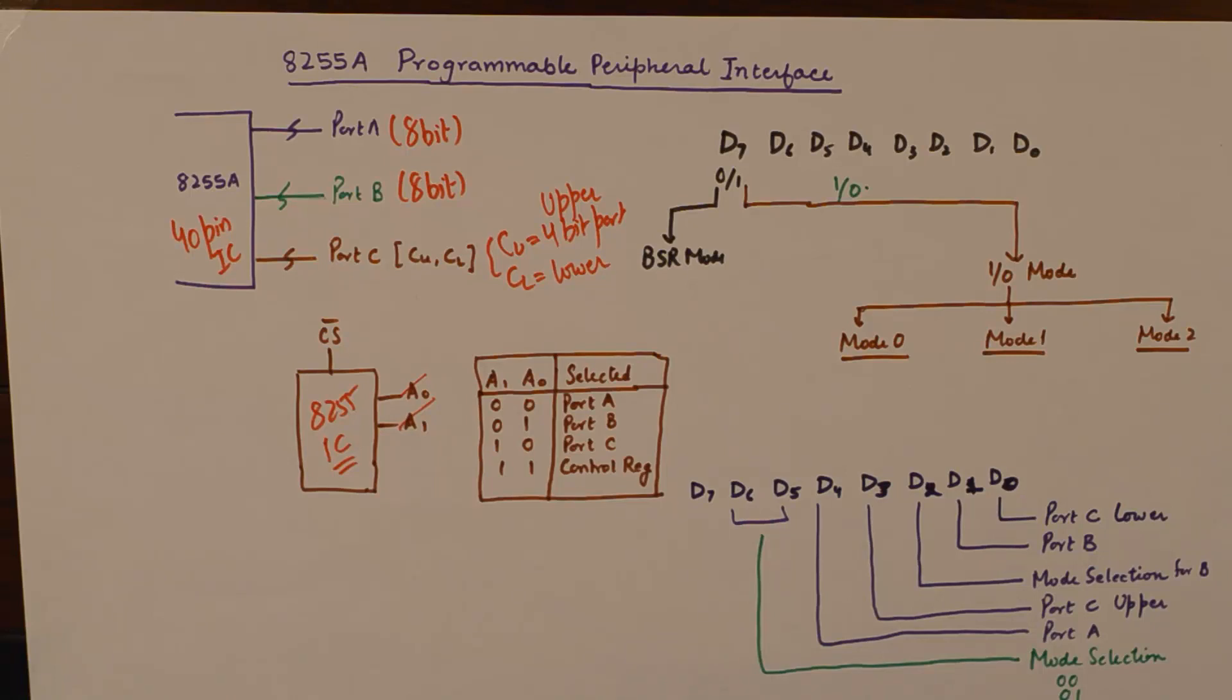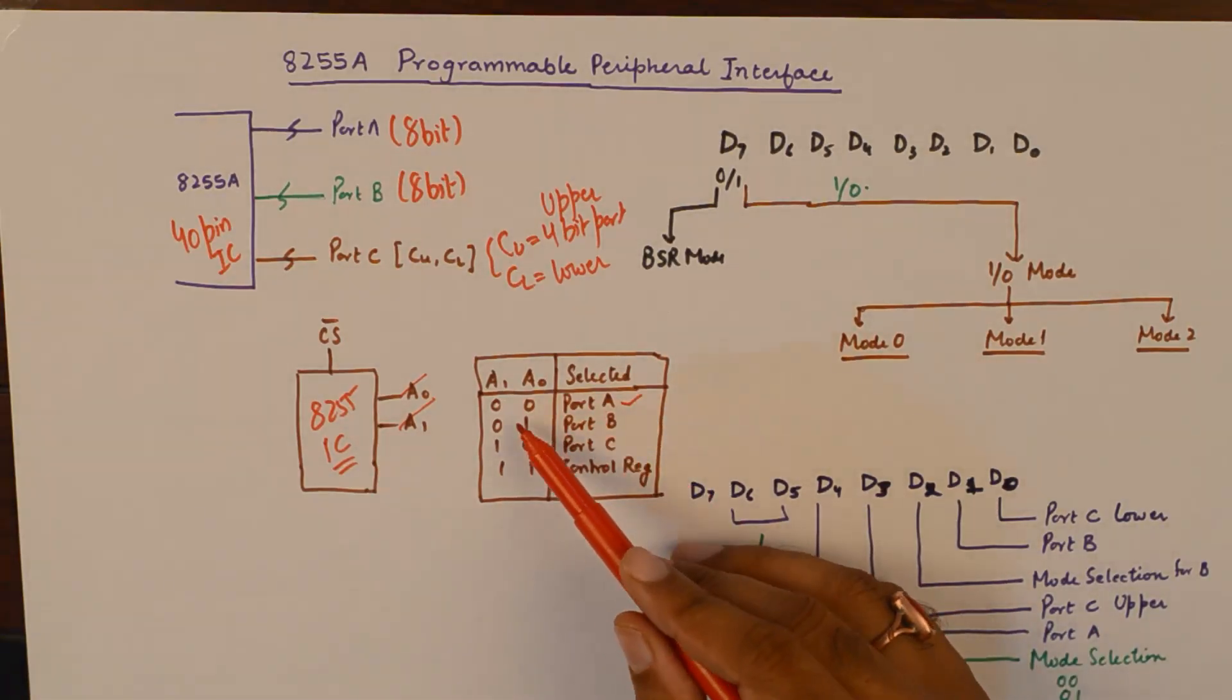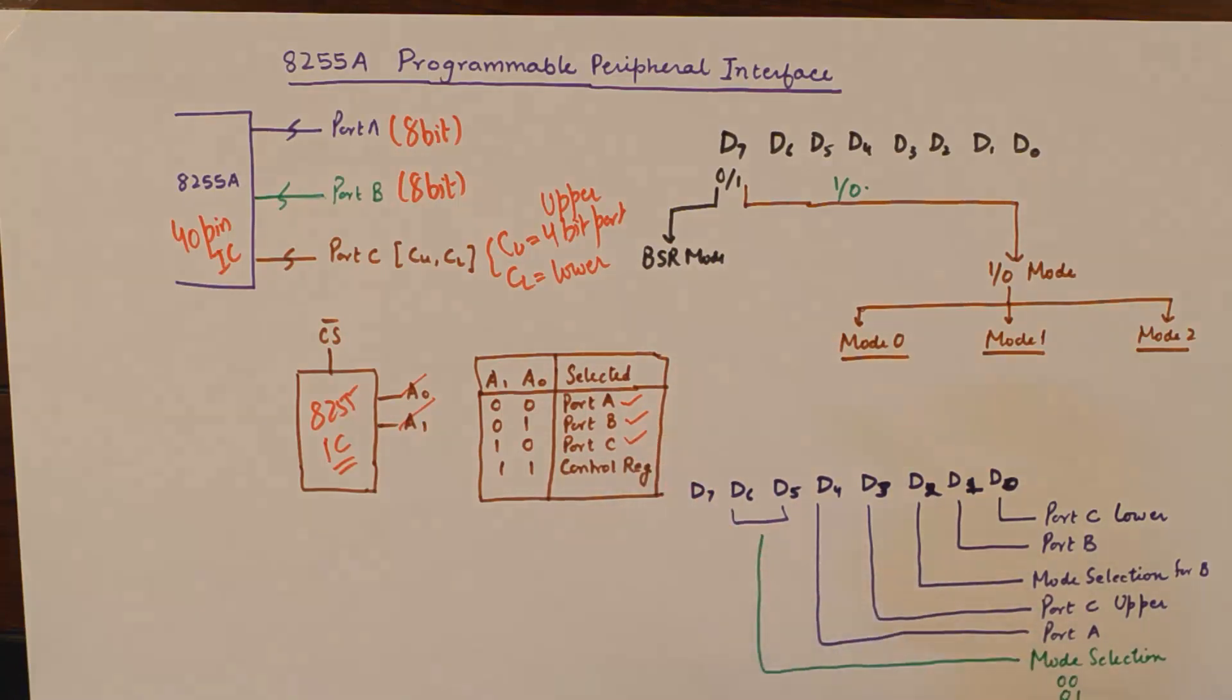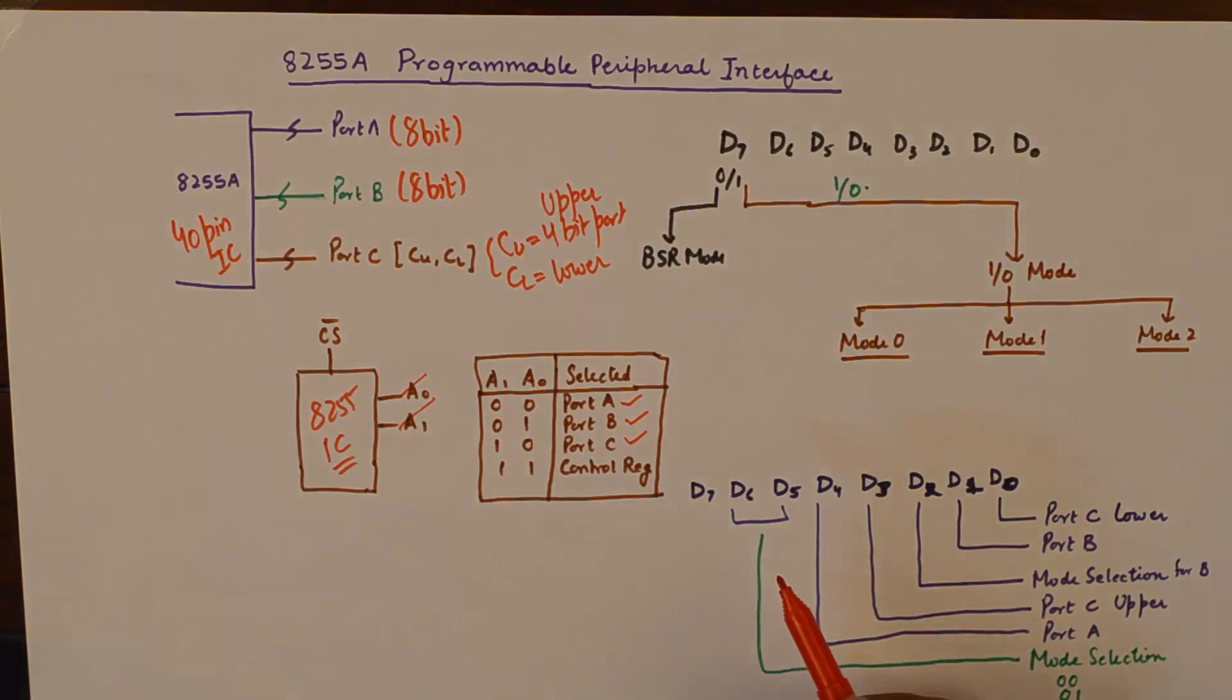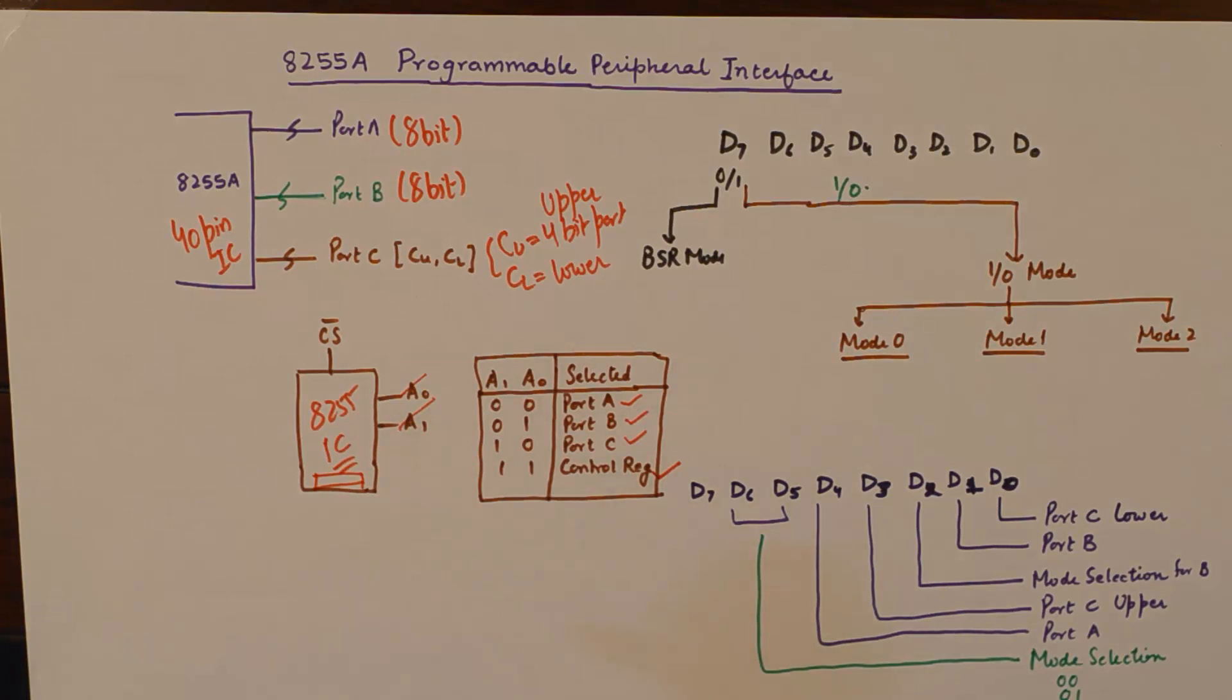And what are those four locations? If we keep A0 and A1 as 00, we go to port A. If we make it 01, we go to port B. If we make it 10, then we go to port C. And if we make it 11, we go to the control register of 8255. You will find an 8-bit control register within 8255 which is of supreme importance.